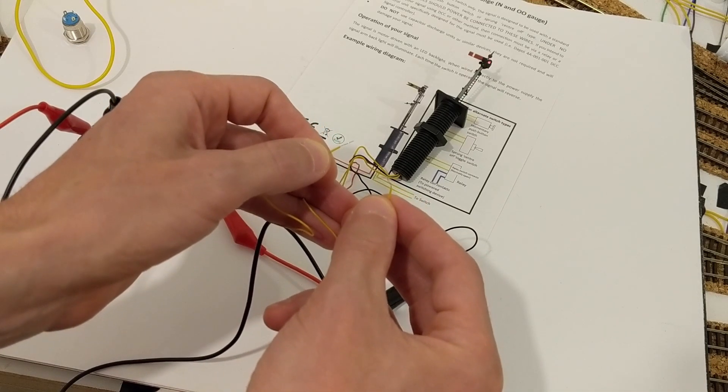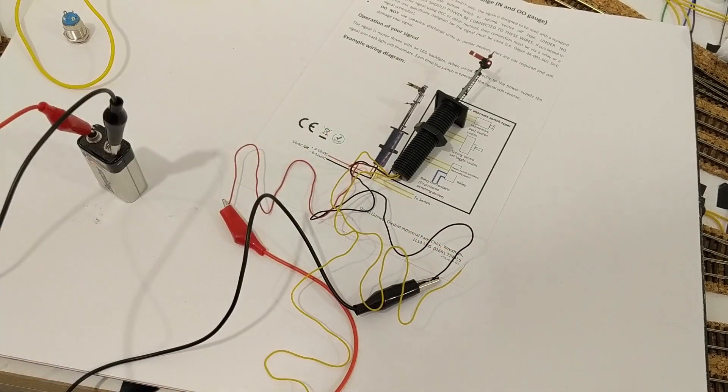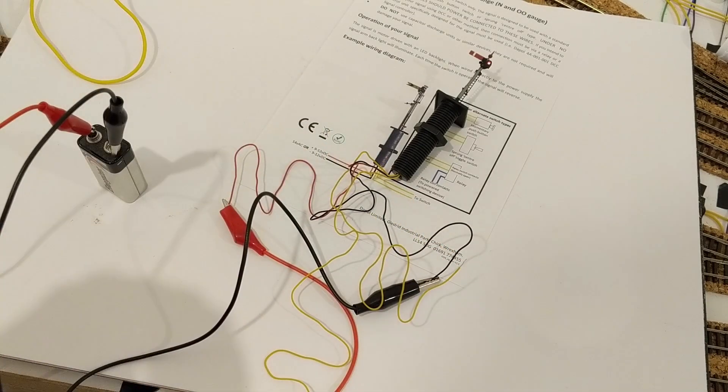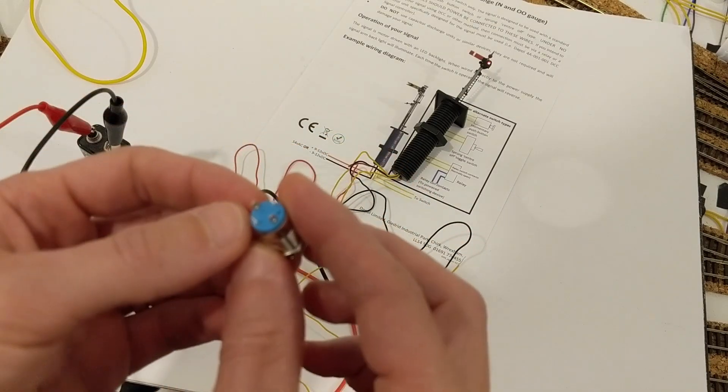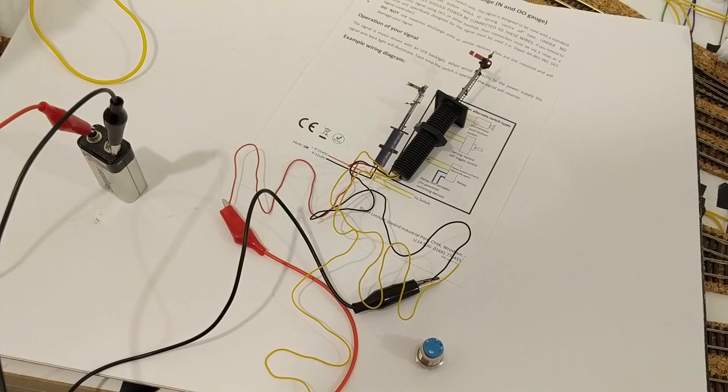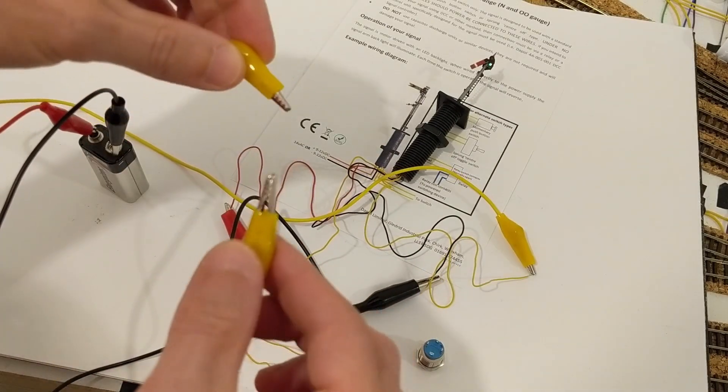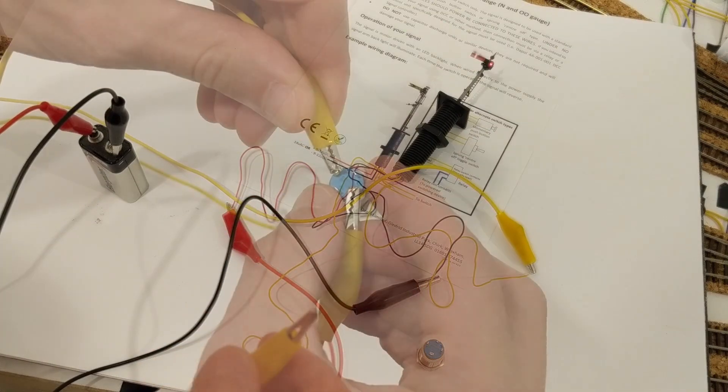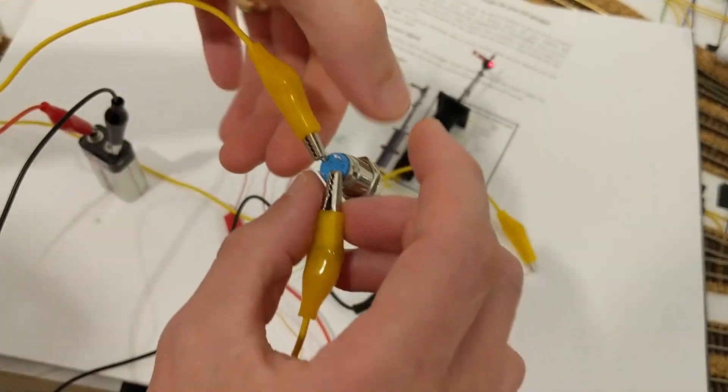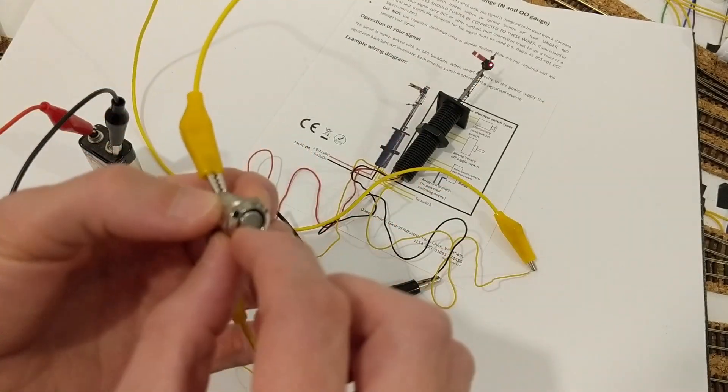I ordered a push button momentary switch from eBay that also lights up. That didn't come with any documentation, but on eBay its description said the LED can be powered with anything from 9 volts to 30 volts, which suits this layout because my LED power source is 12 volts. I assumed that the terminals labelled plus and minus were for LED power, so connected the signal's yellow cables to the other two terminals. That worked.